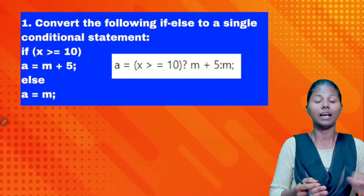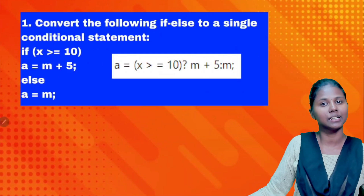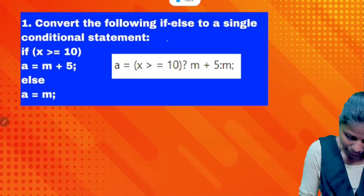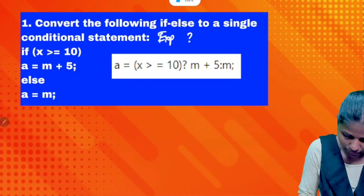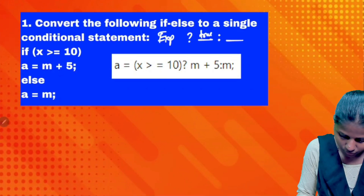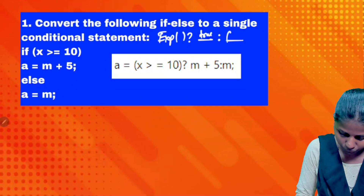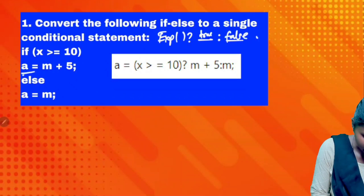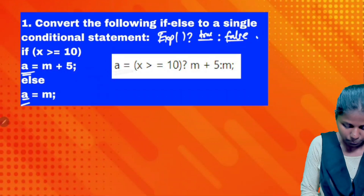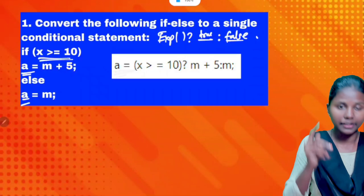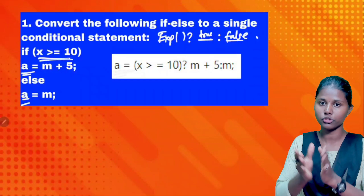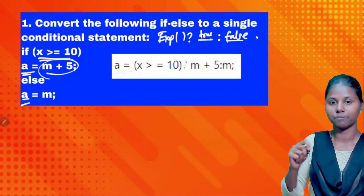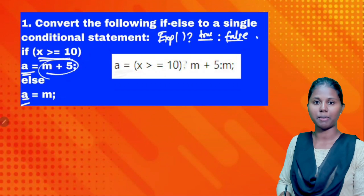This program — this is one change, and the second problem: we will check the syntax. If — assign value A equal to condition: X greater than or equal to 10. So that is the condition check. True: M plus 5. False: else, that is M.